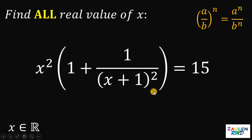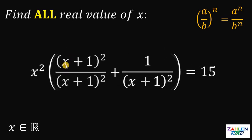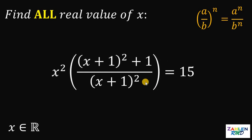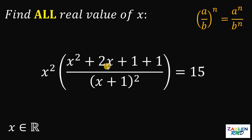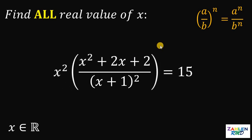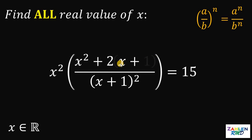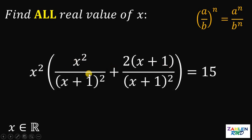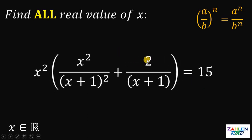Let's combine the terms inside the parentheses. This 1 can be written as (x+1)²/(x+1)². Since they have the same denominator, we can combine them. (x+1)² expands to x²+2x+1, and 1 plus 1 is 2. On the 2x and 2, we factor out 2 to get (x+1). Using the property of similar fractions, we can write x²/(x+1)² plus 2(x+1)/(x+1)², and then cancel (x+1) from numerator and denominator, giving us 2/(x+1).